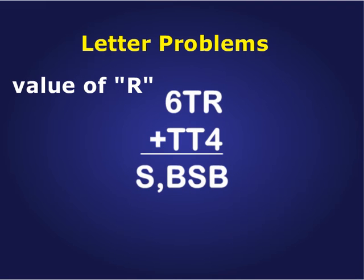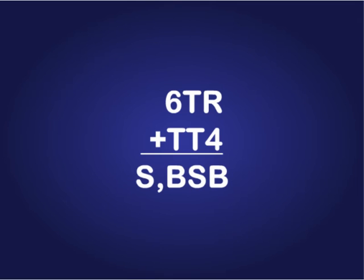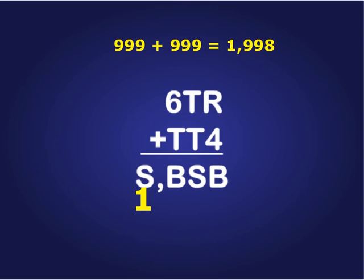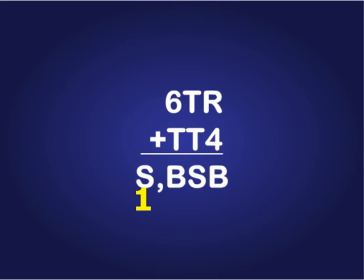Now this strange looking thing is what we'll call a letter problem. In this case, they want to know the value of r. It looks unsolvable, but you have to realize there's a key to these, and the key lies to the left. We're used to adding from right to left, but start working over there trying to solve for b. The key here is s — we want to know what s is, and s has to be a 1. The two largest three-digit numbers are 999 and 999; you add those together and you get 1,998. There's only one digit that s can represent, and it has to be a 1. If it's a 1 in the thousands column, it's also a 1 in the tens column. That's the key to solving this problem.